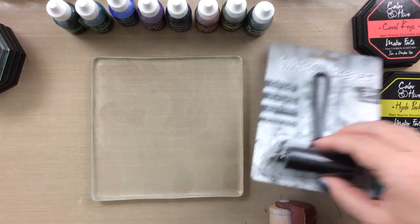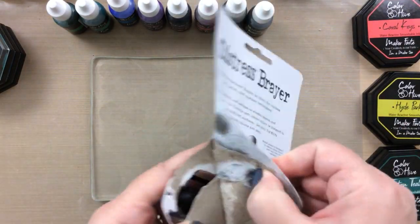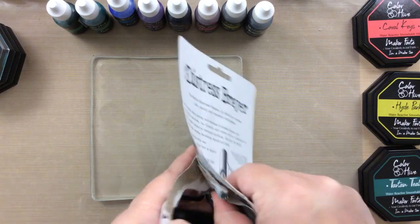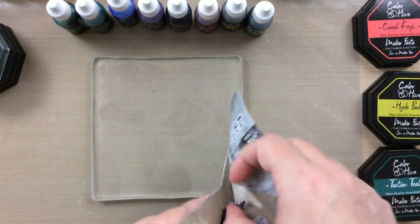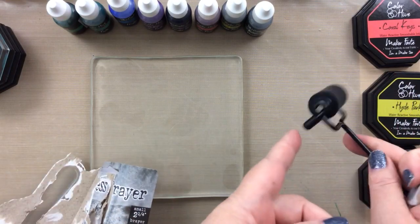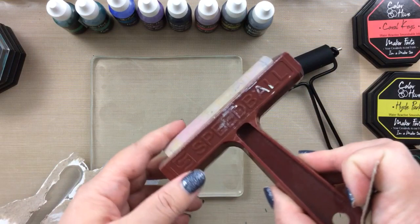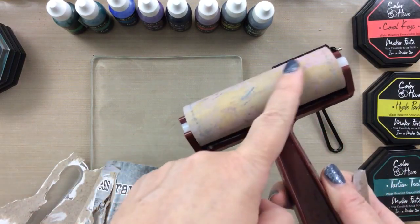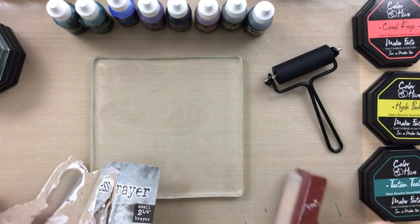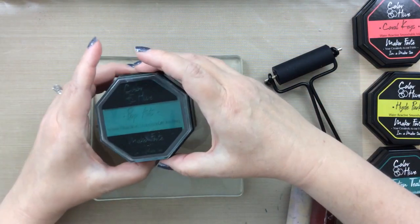One other thing you're going to need is a brayer. I have this brand new mini brayer here that I really like because it has these little feet on the bottom so you can turn it upside down and the brayer itself doesn't actually touch your surface. I also have my tried and true brayer here that I use all the time. This one's a little bigger so I'm going to be using this size today.